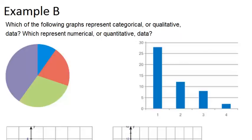So the first one we have is a pie chart, and a pie chart is always qualitative data.